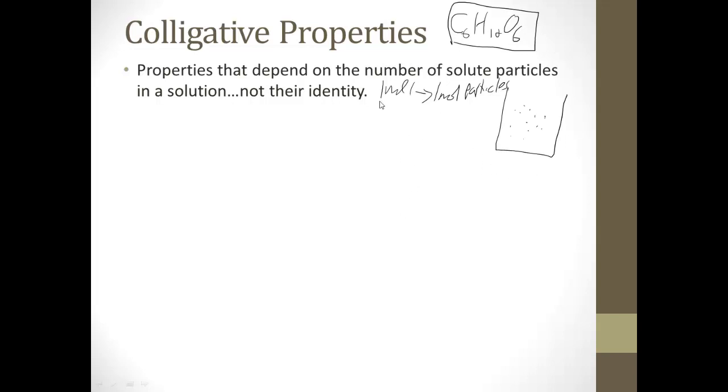Now what if it's salt, NaCl? As we know, the salt will ionize into Na plus ions and Cl minus ions. So every one salt molecule becomes two separate particles in the solution. So one mole of salt is going to end up making two moles of particles, or ions.